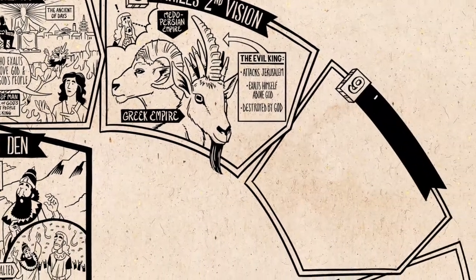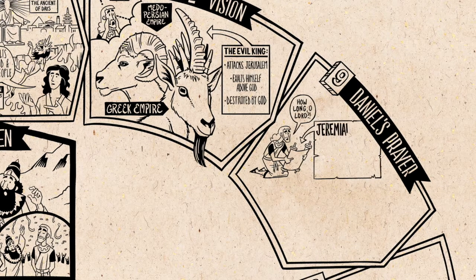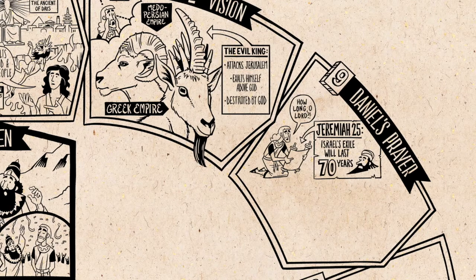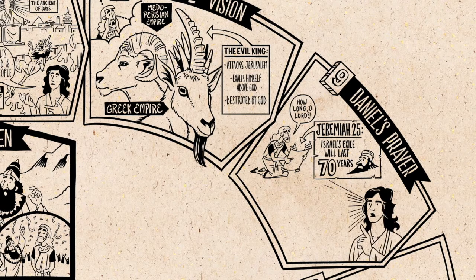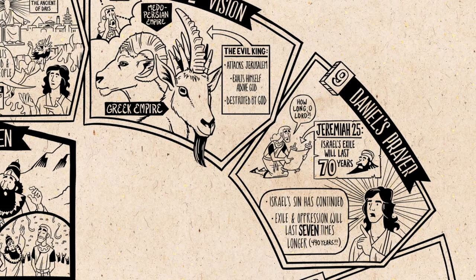By chapter 9, Daniel is very puzzled — especially as to when all of this is going to take place. So he consults the scroll of the prophet Jeremiah, where God said that Israel's exile would only last 70 years. For Daniel, the 70 years is almost up, and so he asks God to fulfill his promise soon. But an angel comes and informs him that Israel's sin and rebellion has continued, and so their time of exile and oppression will continue on seven times longer than Jeremiah envisioned.